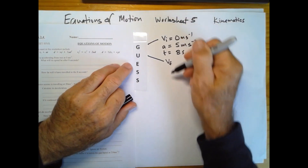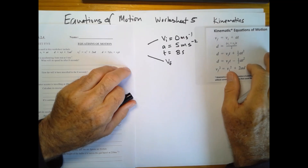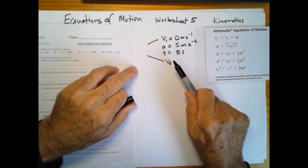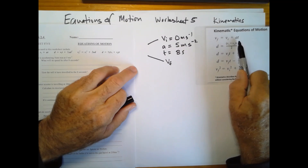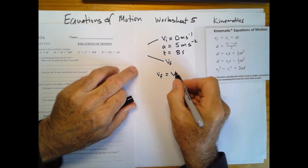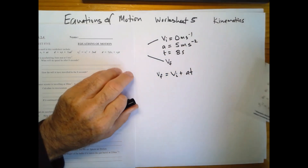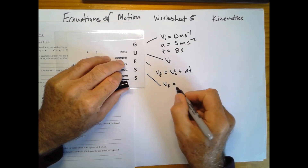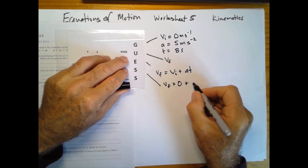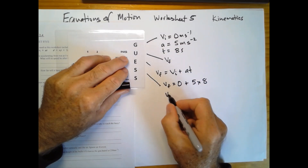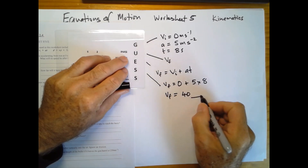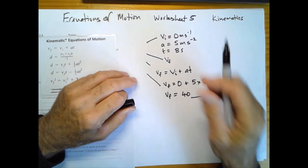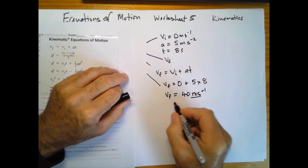We've got these knowns — v-initial, acceleration, and t — so which equation ties just those together with v-final? It's the first one: v-final equals v-initial plus a times t. Substituting in: v-final equals 0 plus 5 times 8. Final velocity equals 40 meters per second. Units are absolutely vital — velocity is in meters per second. So that's the answer to question 1a.